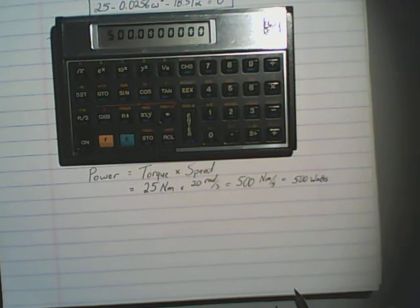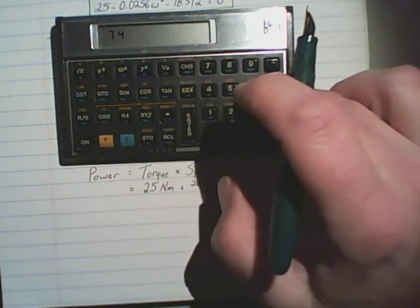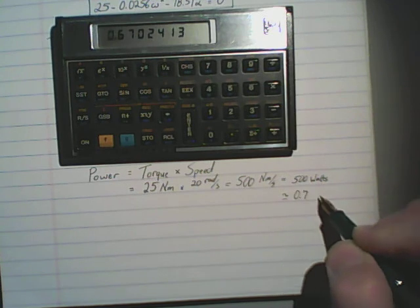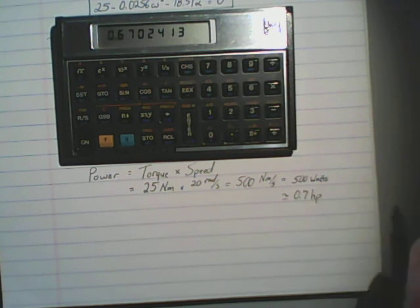Just to get that maybe in terms that are a little bit more familiar, there's 746 watts per horsepower, so this is about equal to 0.7 horsepower.